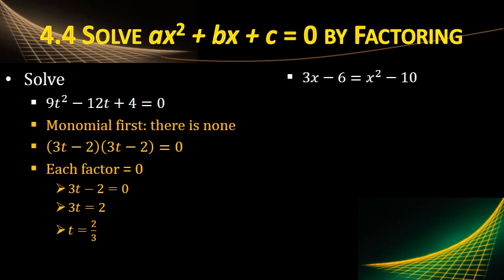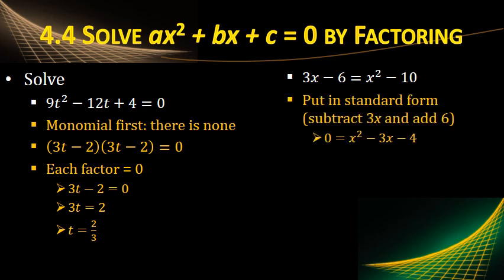Let's try solving another one. So we need to make it equal to 0. So let's move everything to one side. So I'm going to subtract the 3x and add 6 to both sides. So we end up with that.